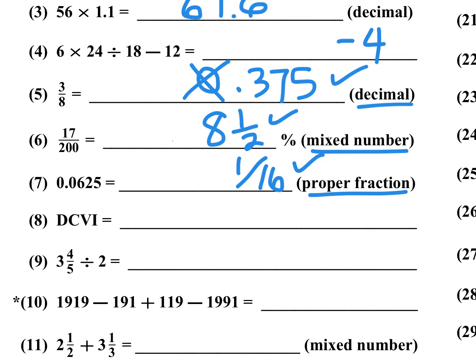Number 8 is a Roman numeral: DCVI. D is 500, C makes it 600, and VI is 6, so it's 600 plus 6, or 606.